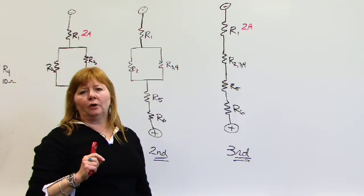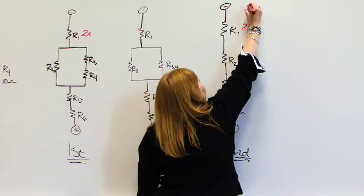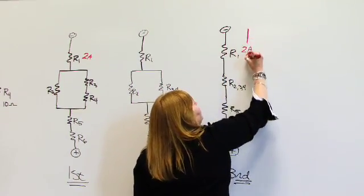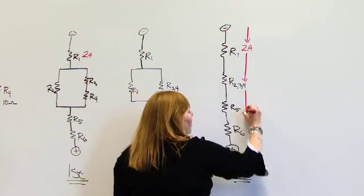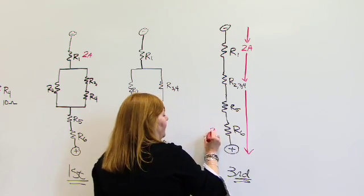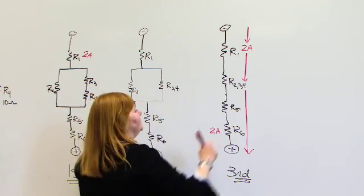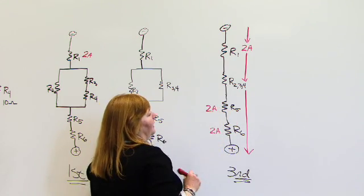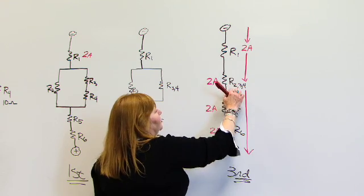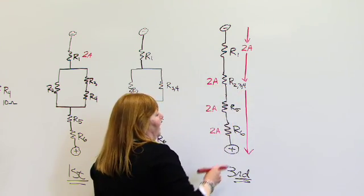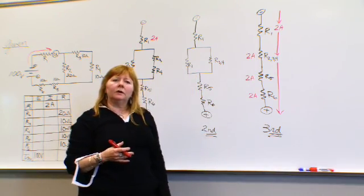Two amps in a series circuit is constant. That's one thing we know. We know that current is constant in a series circuit. So if I have two amps coming through R1, I also have two amps flowing all the way through this circuit. That means that I have two amps through R6. That must also mean that I have two amps through R5. And it must mean that I have two amps through R2, 3, and 4. And with that, I have more information that I can feed into my table.